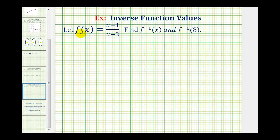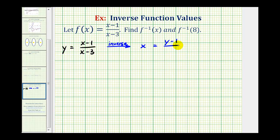To get started, we're first going to write the original function in terms of x and y. F of x equals y, so we would have y equals the quantity x minus one, divided by the quantity x minus three. Notice how the output of y for f is the input x for the inverse function, and the input of x for f is the output of y for the inverse function.